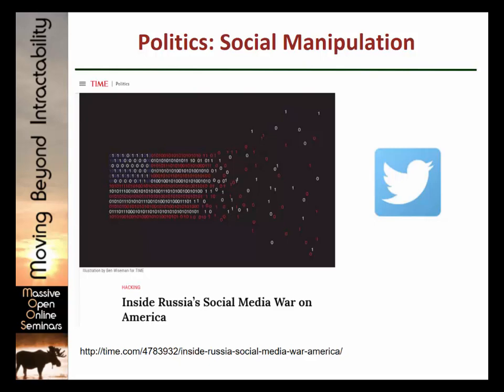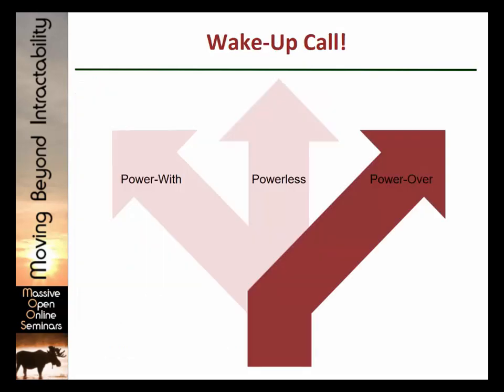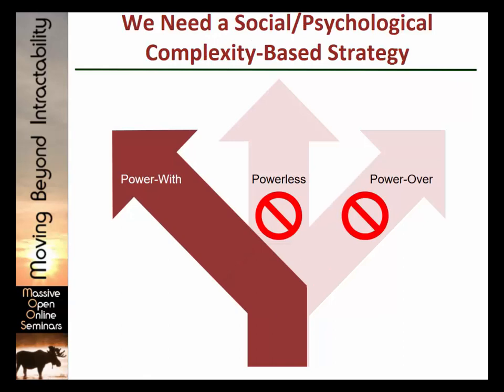And what you're essentially doing with this is manipulating peer pressure by creating fake people. In some districts in the run-up to the election, according to this article, something approaching half of all Twitter posts were fake propaganda-based efforts to manipulate things. So this is all a bit of a wake-up call. The folks who figured out how to work in the realm of social and psychological complexity are taking society down the path of a power-over future. If we want a power-with future, we've got to understand how a social and psychological-based strategy can be adapted in the service of the common good.